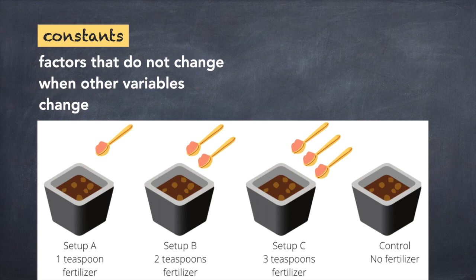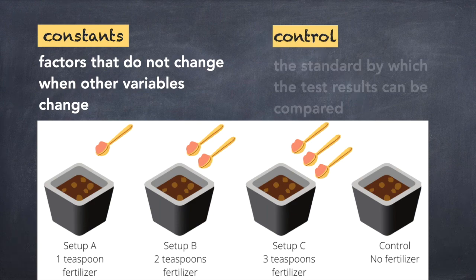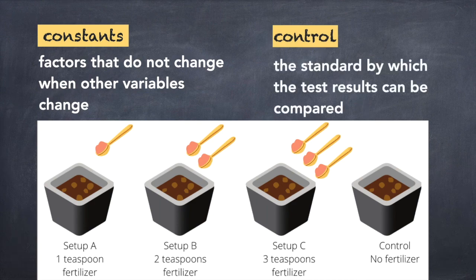Three of the seeds receive different amounts of fertilizer which is the independent variable. The fourth seed will be planted on a plain garden soil. This seed is a control. A control is the standard by which the test results can be compared.